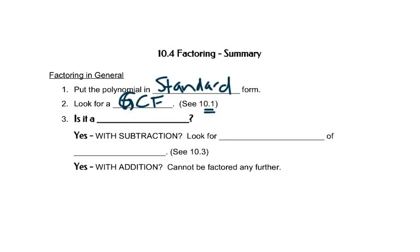Then we need to ask ourselves, is it a binomial? Does it have two terms? If the answer is yes, and it has subtraction, then we need to look for a difference of subtracting squares. We talked about that in 10.3. If it has two terms, but it's addition, we can't do anything with it, remember.